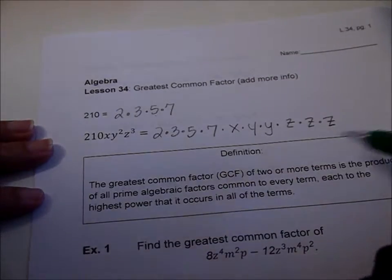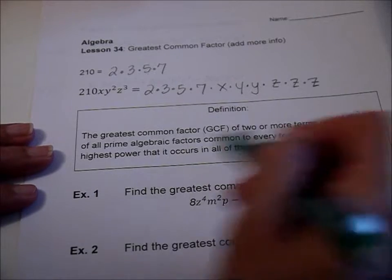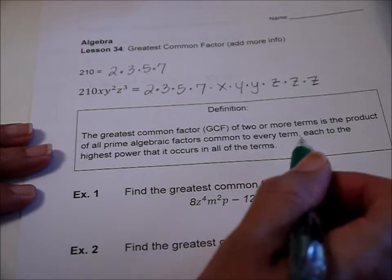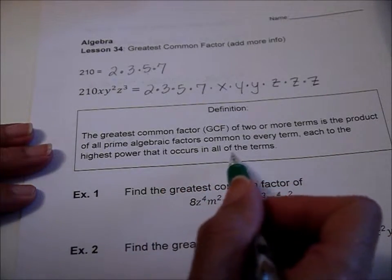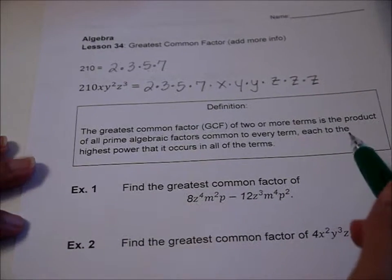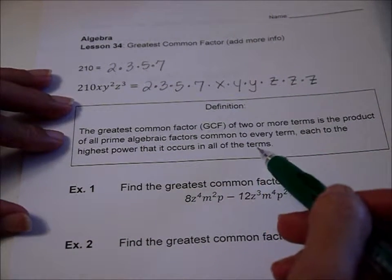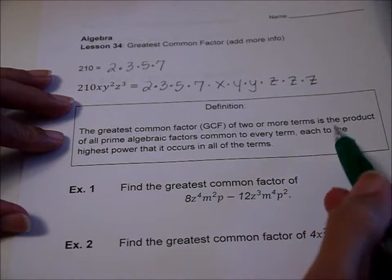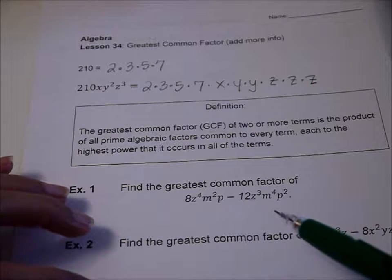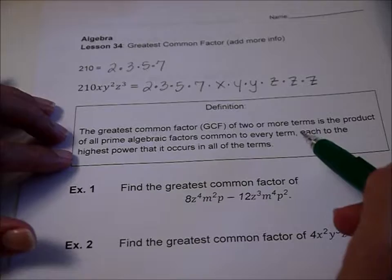Now we're going to use this idea to talk about the greatest common factor between two or more terms is the product of all prime algebraic factors common to every term, each to the highest power that it occurs in all of the terms. So that might not mean anything to you, but the book is really good about introducing you to definitions written in a mathematical way. So it's good to start understanding what these mean. Sometimes you want to try problems and then go back to the definition, and that will make the definition make more sense.